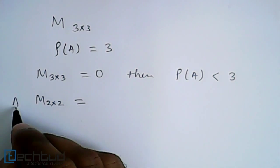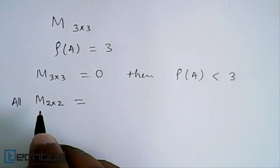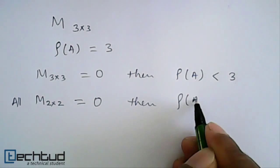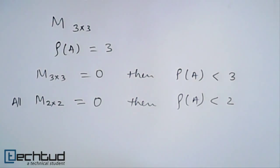Otherwise, if all the 2 by 2 minors are equal to 0, then rank of matrix is less than 2, and we will check for 1.